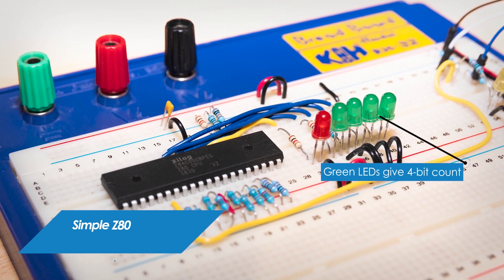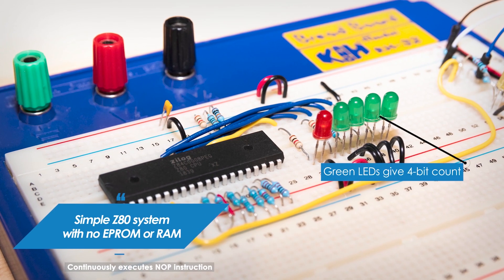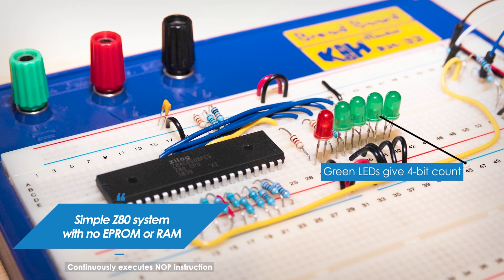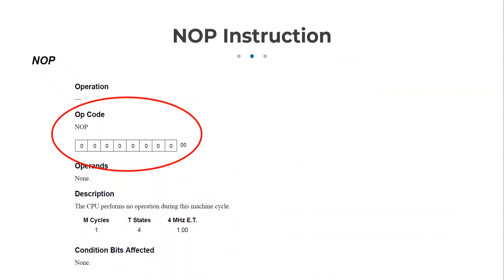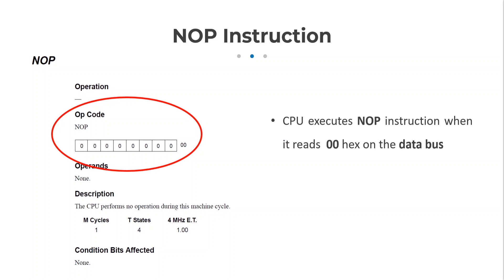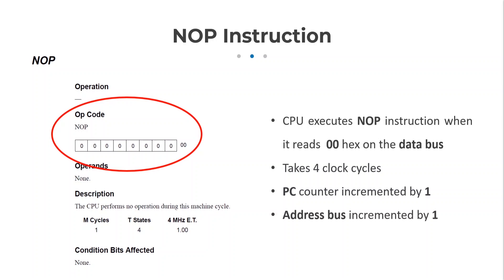So what's the simplest thing I can do with my Z80 CPU and actually see something happen? If I set it up in this configuration, I can get the Z80 to continuously execute the NOOP instruction and see the green LEDs give a binary count. The CPU will execute a NOOP instruction when it reads all zeros on the data bus — NOOP tells the CPU to do nothing and then move on to the next instruction. The NOOP instruction takes four clock cycles to execute, and then the program counter increments by one and outputs this new value to the address bus, which is what I wired the green LEDs to.